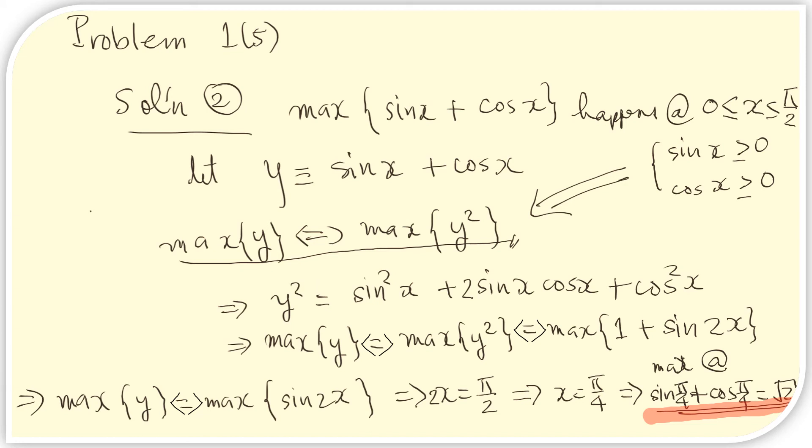This second solution works because we know that both sin x and cos x are positive in the interval where the maximum is located. We know that it is located in this interval because of the graph we drew in the previous slide. So let us let y equal the sum here. Because all these values are positive,